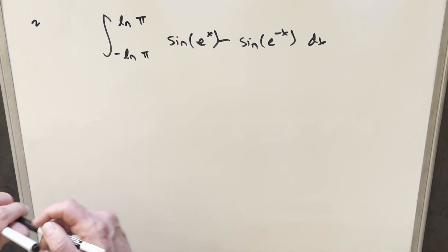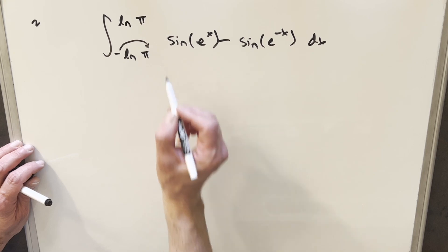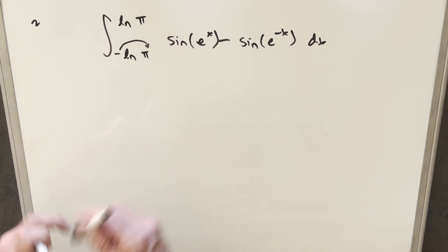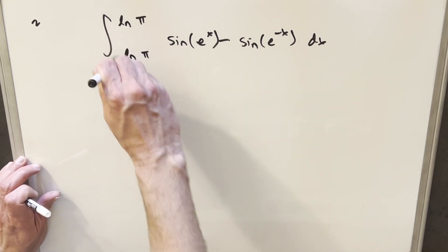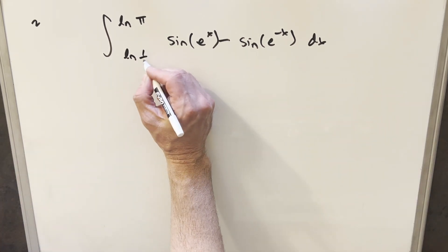To get started with this, I actually want to kind of just manipulate the bounds. Noticing I can take this minus 1 and bring it into the exponent on the π. So what that's going to allow me to do with exponent properties is actually just rewrite this as natural log of 1 over π.